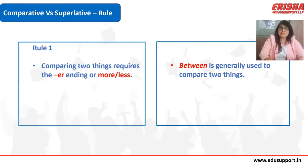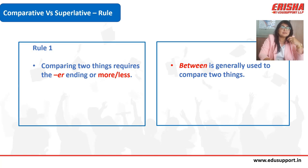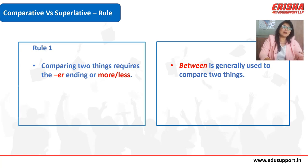Whenever we are comparing two things we use the comparative form of the adjective. The comparative form ends with '-er' or it uses 'more' or 'less' before the adjective. For example: soft → softer → softest; beautiful → more beautiful → most beautiful.